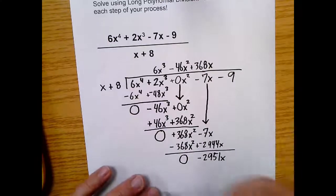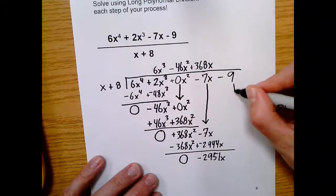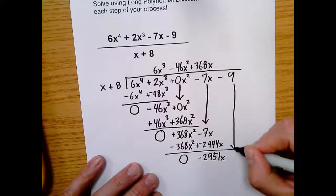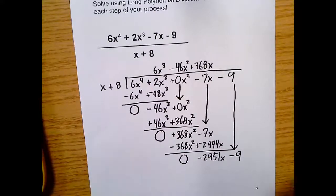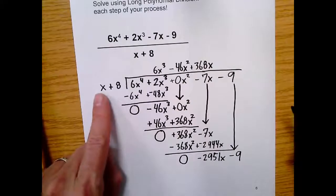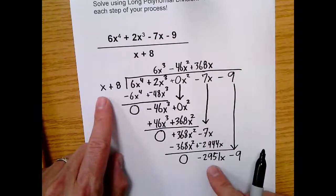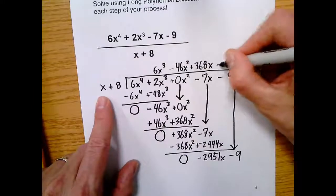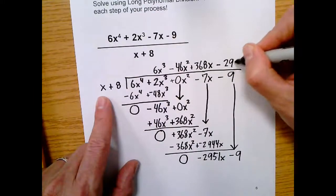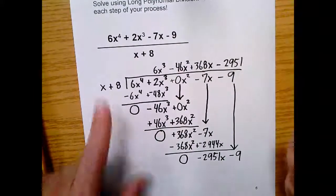You subtracted. And the last step is to bring it down. We ask ourselves the question again. What does x have to multiply by to become negative 2,951x? Well, that's just negative 2,951. And let me take a second here to point something out. Look at your quotient so far. Three, two, one, zero. We're on the right track. Things are making sense. This is good news.